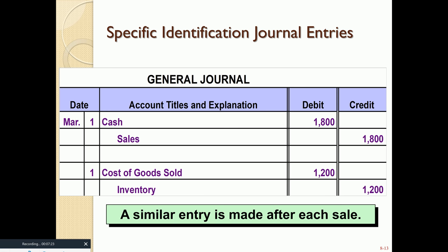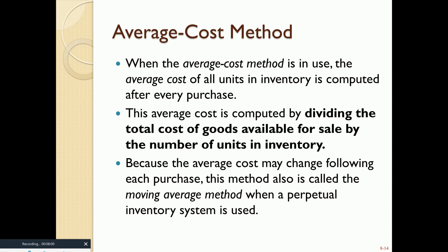There are two journal entries. First, we record the sale for $1,800 by debiting cash and crediting sales revenue. Second, our internal cost of that inventory was $1,200, so we debit cost of goods sold — which is just a fancy way of saying inventory expense — and credit inventory for $1,200. That is the specific identification method, where we simply identify the exact unit we are taking from inventory.